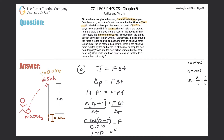If negative 250 N is the force the tree imparts back on the ball, then the force that the ball imparts to the tree is the equal but opposite: 250 newtons. That is the final answer for letter A — 250 newtons on the tree.